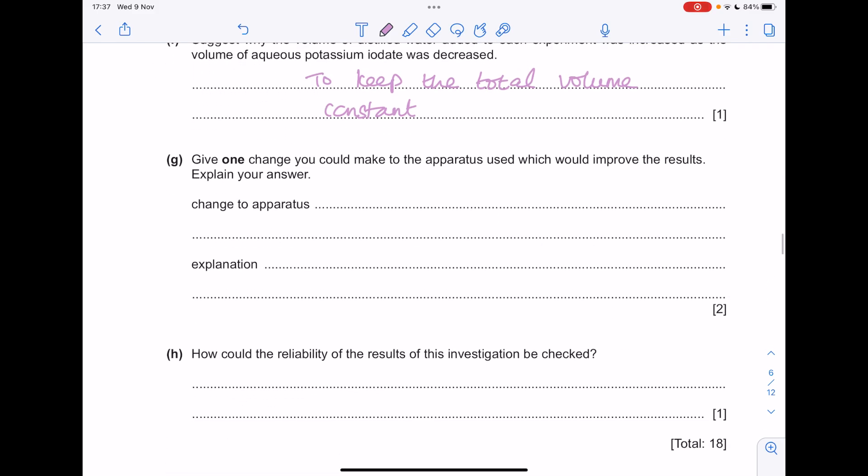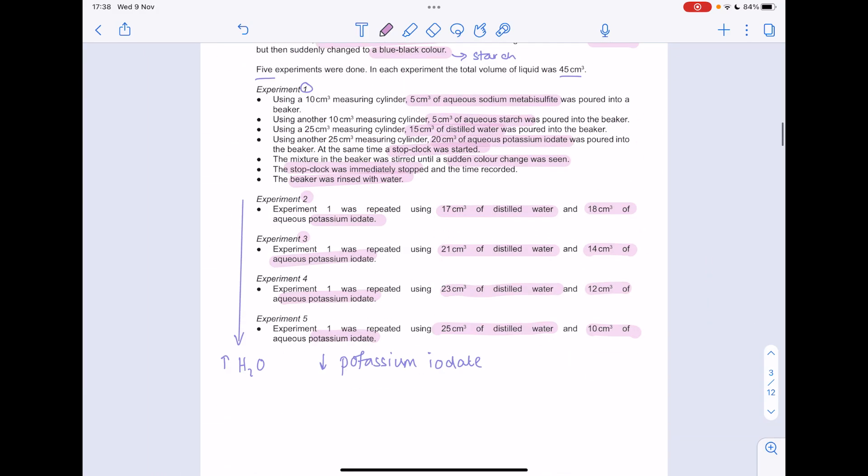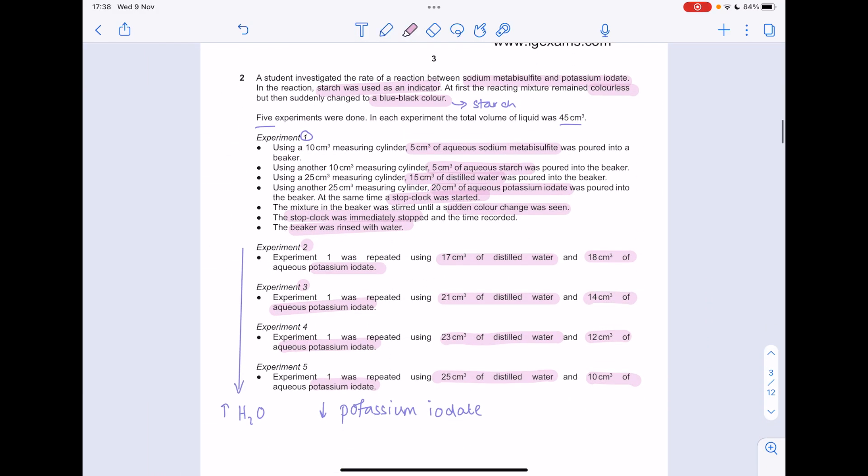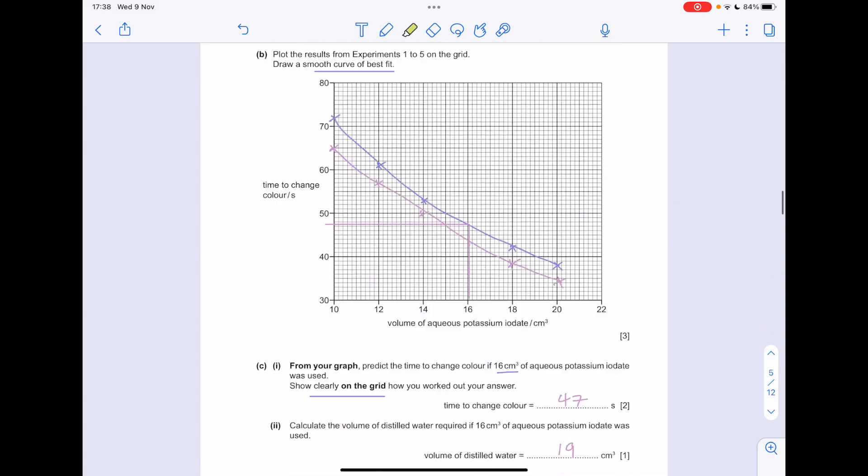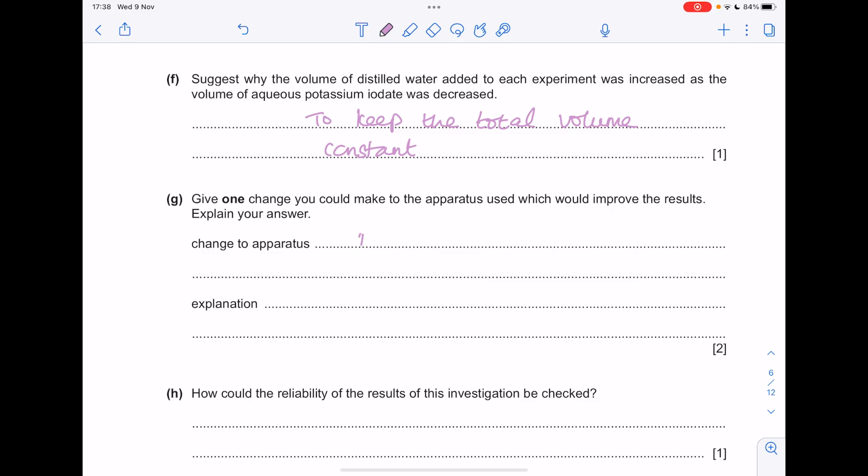Give one change you can make to the apparatus, which would improve the results, explain your answer. If you look at this, throughout the whole thing, they constantly mention measuring cylinders. These are a very imprecise piece of measuring apparatus. You want to use a burette or pipette instead. Burettes are more accurate than measuring cylinders.